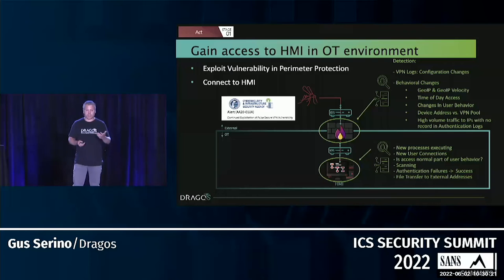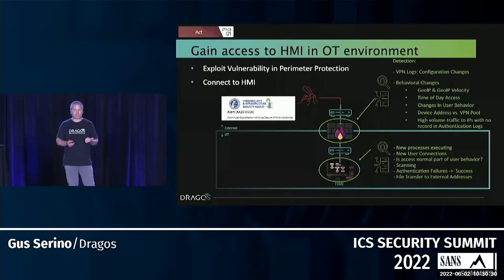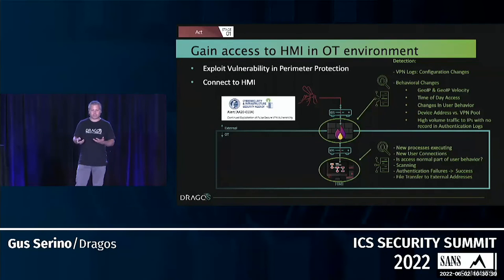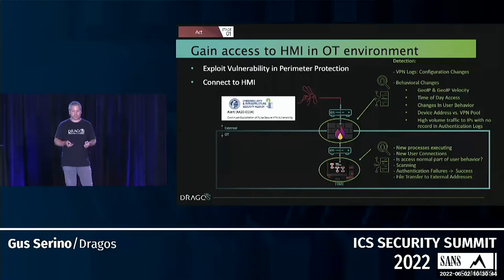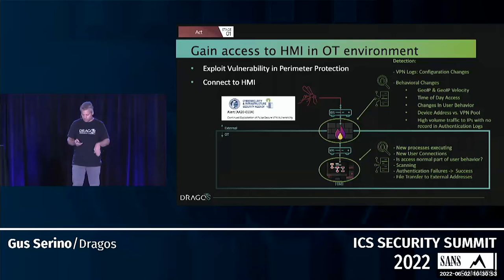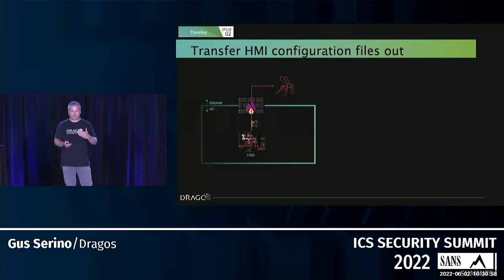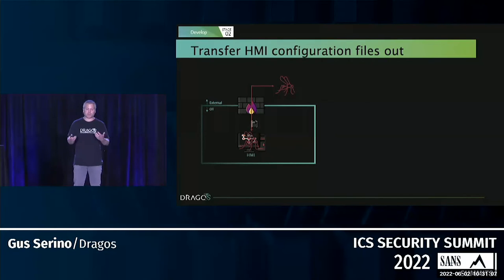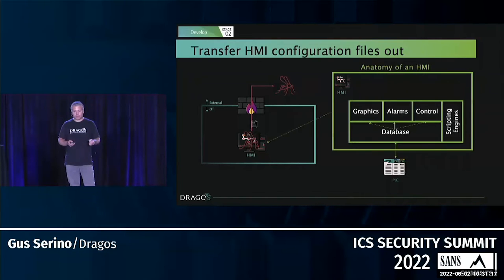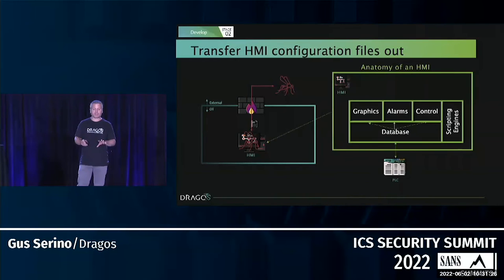Moving down into the HMI: the adversary gets in with legitimate credentials and pivots to the HMI. For detection there, look for new processes executing on the HMI, new user connections, unusual scanning activity, authentication failures followed by success indicating brute force, and file transfers to external addresses. At this point the adversary takes the HMI files and exfiltrates them — this is where we pivot from ICS kill chain stage one to stage two, with ICS knowledge and interest now in play. HMIs alone give an adversary enough tools to cause harm to the process.